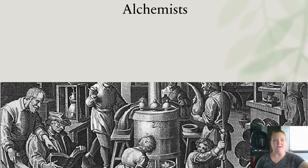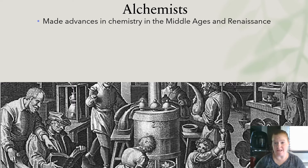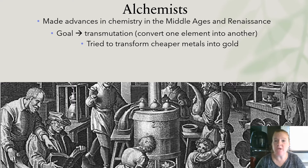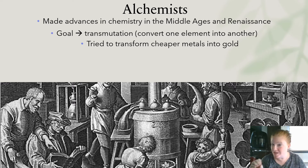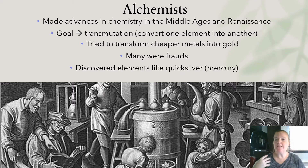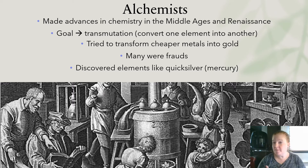Next we have alchemists. Alchemists made advances in chemistry in the Middle Ages and Renaissance. Their goal was transmutation — they wanted to convert one element into another, basically for the purpose of trying to transform cheap metals into gold. Many alchemists were frauds, but they did do some good and some actual chemistry, and some helped with the discovery of elements like quicksilver, which we know as mercury.